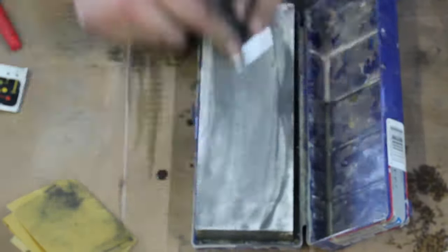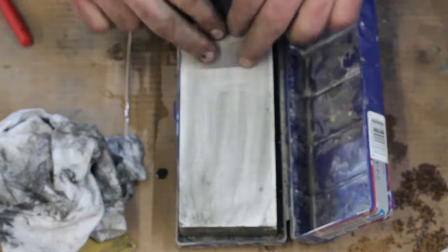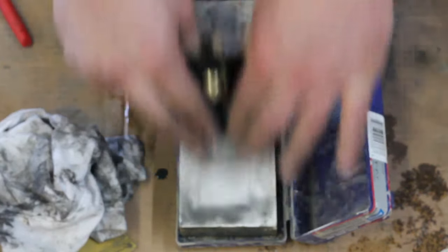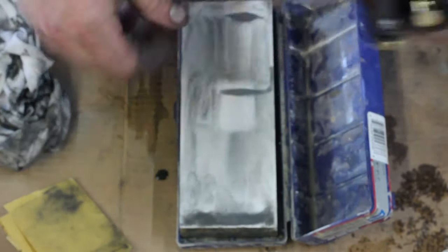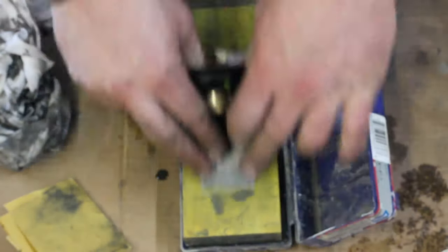I move from there to I think a 4000 grit water stone, which was soaking. I flattened the back and then I go and flatten the primary bevel as well as a micro bevel.